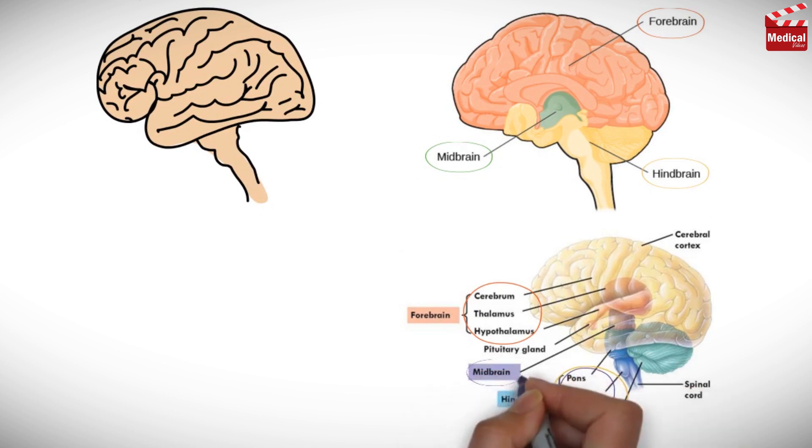Medulla, pons, and midbrain are collectively called the brain stem. Now we're going to discuss each part separately, but keep in mind they are all interconnected and work together.